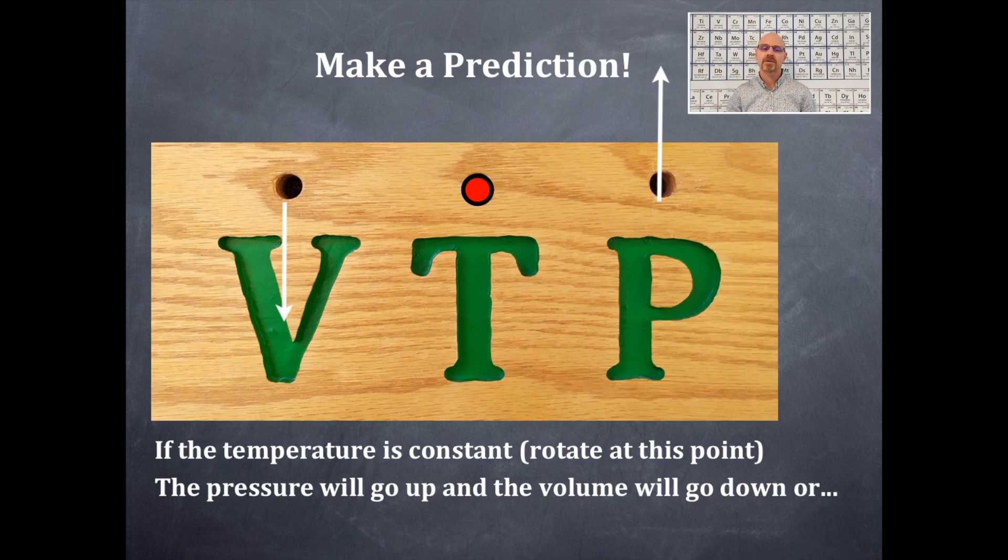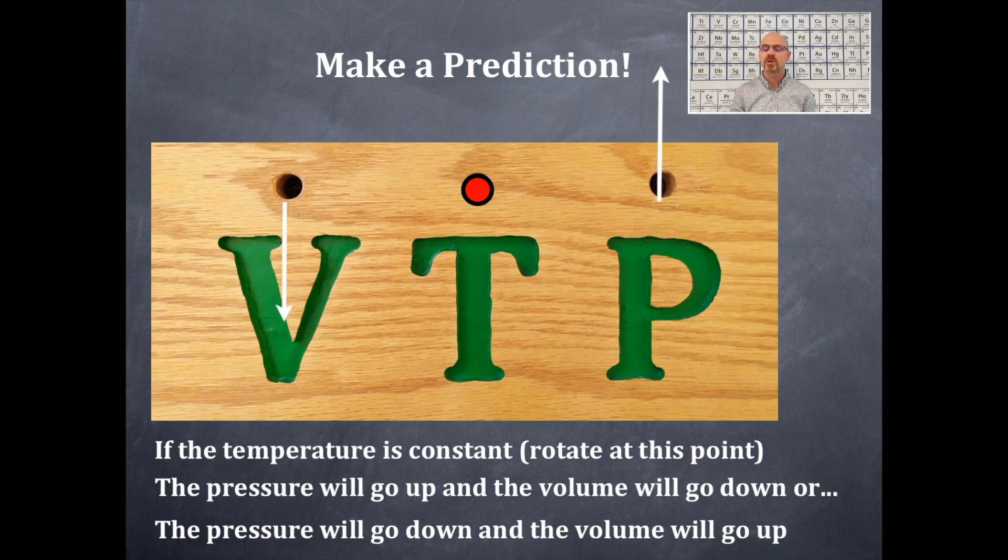Alternatively, you could have the other situation occur. And that is, the pressure will go down, and the volume will go up. Now again, we're rotating at the T. That's where you put like a pin in there, and then you rotate this piece of wood at that point. And see, now we're going to rotate it. So you should see that Boyle's Law is a relationship where the volume goes up and the pressure goes down. It's an inverse relationship. If the volume goes up, the pressure goes down. If the volume goes down, the pressure goes up. An inverse relationship.